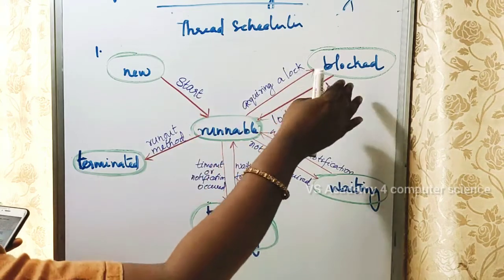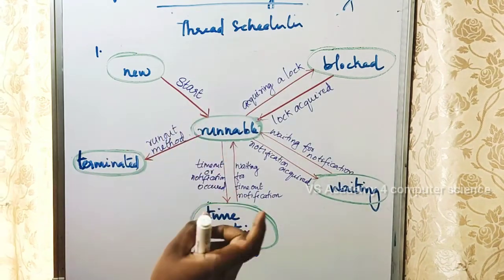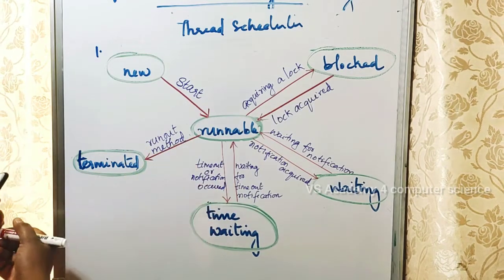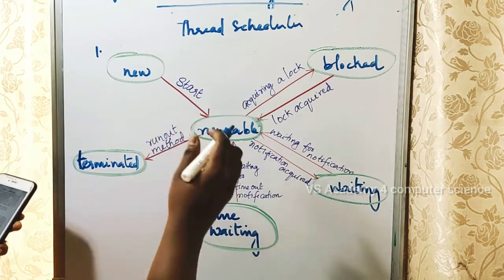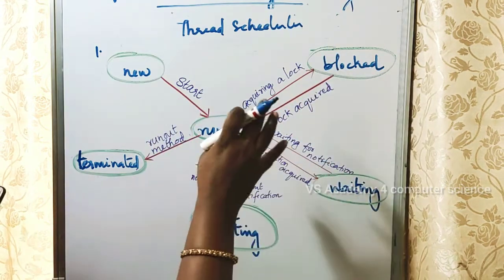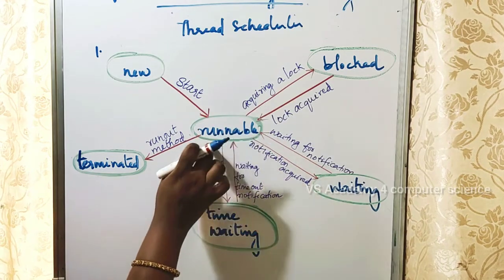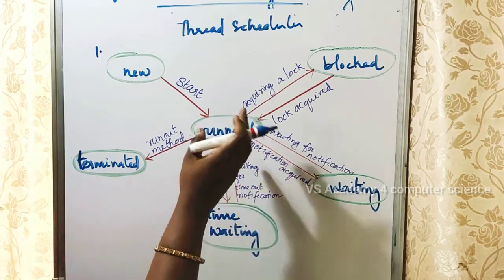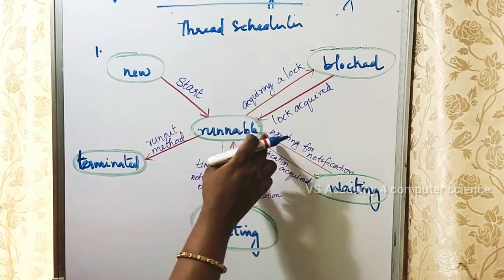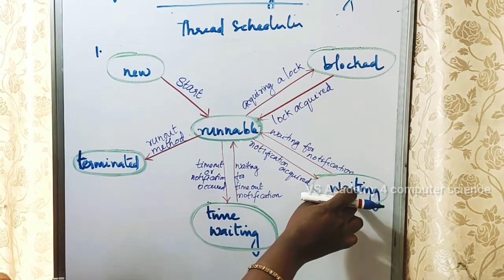Next is the blocked state. The blocked state is like a lock. When a thread is temporarily inactive, it can go into either a blocking state or a waiting state. The blocked state occurs when a thread tries to access a protected section of code.